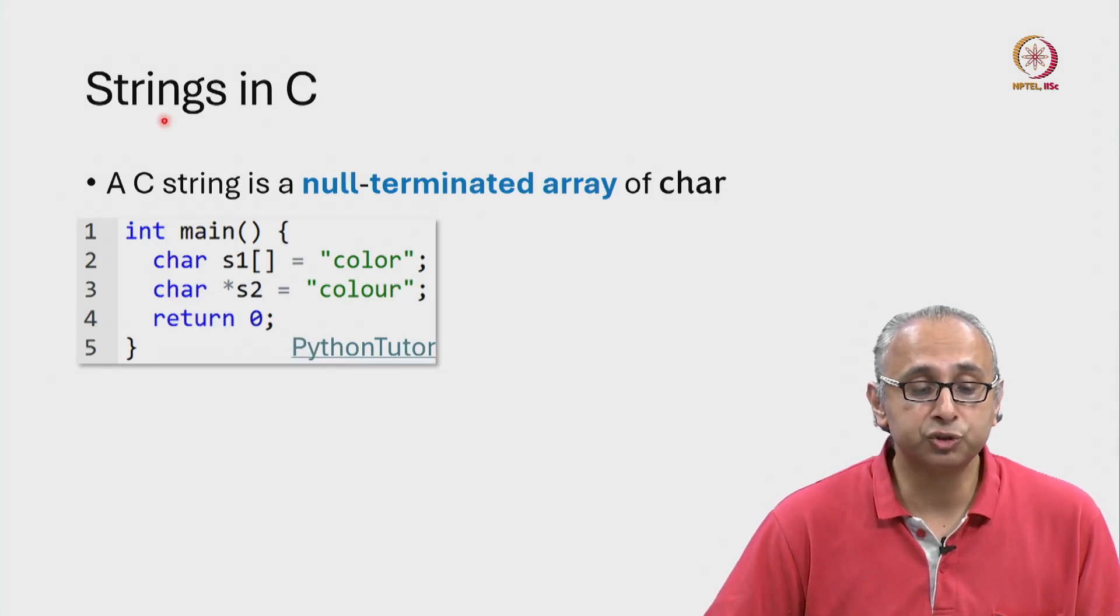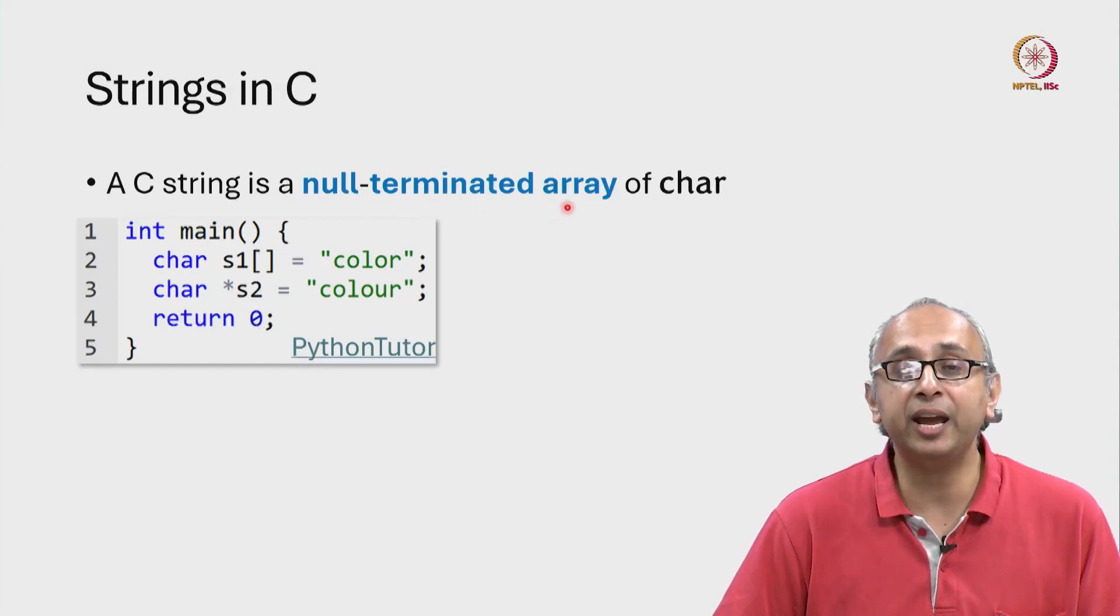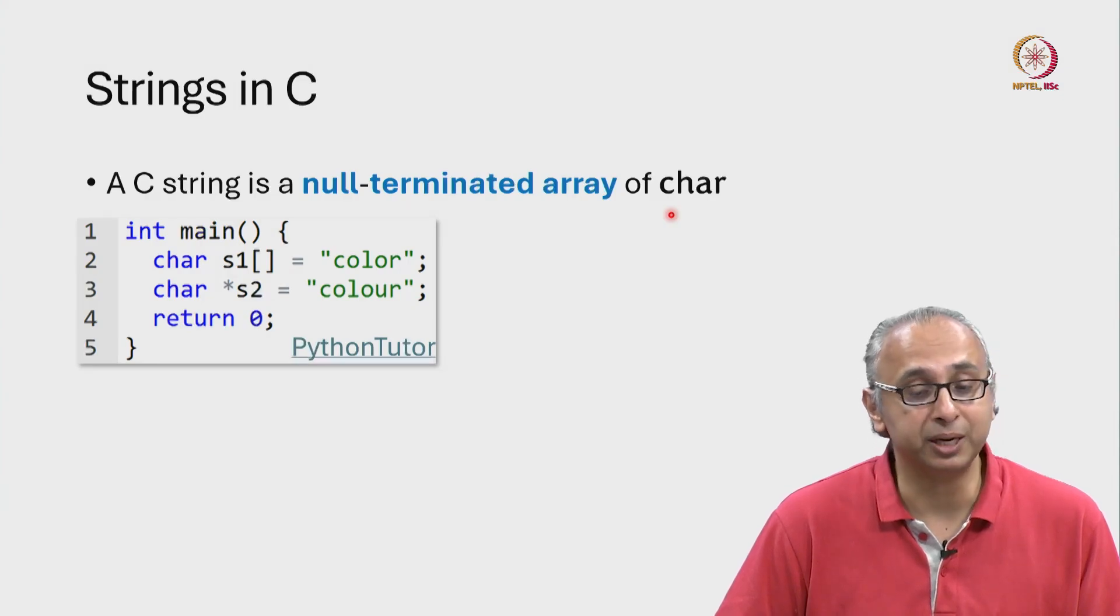So it turns out that a string in C is a null terminated array of char. Now there are a lot of technical terms here that we're not familiar with.